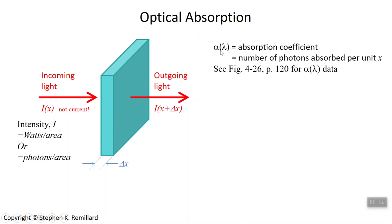We'll call alpha of lambda the absorption coefficient, and it's literally the number of photons that are absorbed per unit length from this incoming light. I suggest you take a look at page 120 at figure 4-26 for an example of absorption data. It's very wavelength dependent and you should really see what that looks like. I don't have it in the PowerPoint.